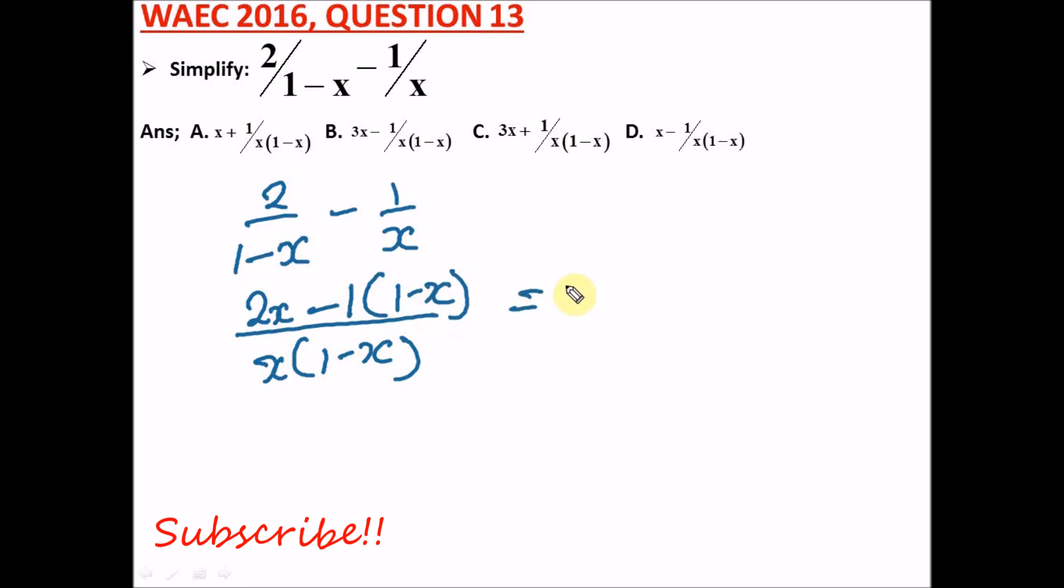So we have 2x minus, this will be 1 multiply, opening this bracket: minus 1 multiplying 1 will give us minus 1, and minus 1 multiplying minus x will give us plus x, and everything divided by x bracket 1 minus x.